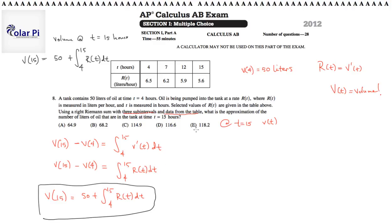So, clearly, the three intervals suggested by the table are 4 to 7. That's one interval. The next one is 7 to 12. And the one after that will be 12 to 15. And therefore, our three delta x's, which is the width of the three rectangles we'll have to use...